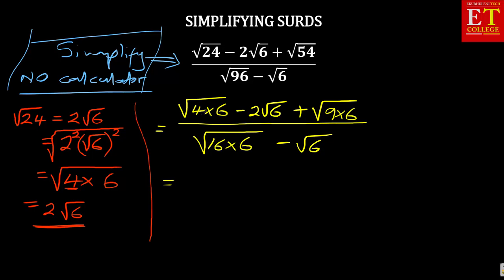Now, you can go on now to use your calculator in this case. Square root of 4, remember we said it was 2 root 6 minus 2 root 6 plus square root of 9 is 3 root 6 over square root of 16 is 4 root 6 minus root 6. Now, if you can look at this carefully, 2 root 6 minus 2 root 6, it can cancel out.